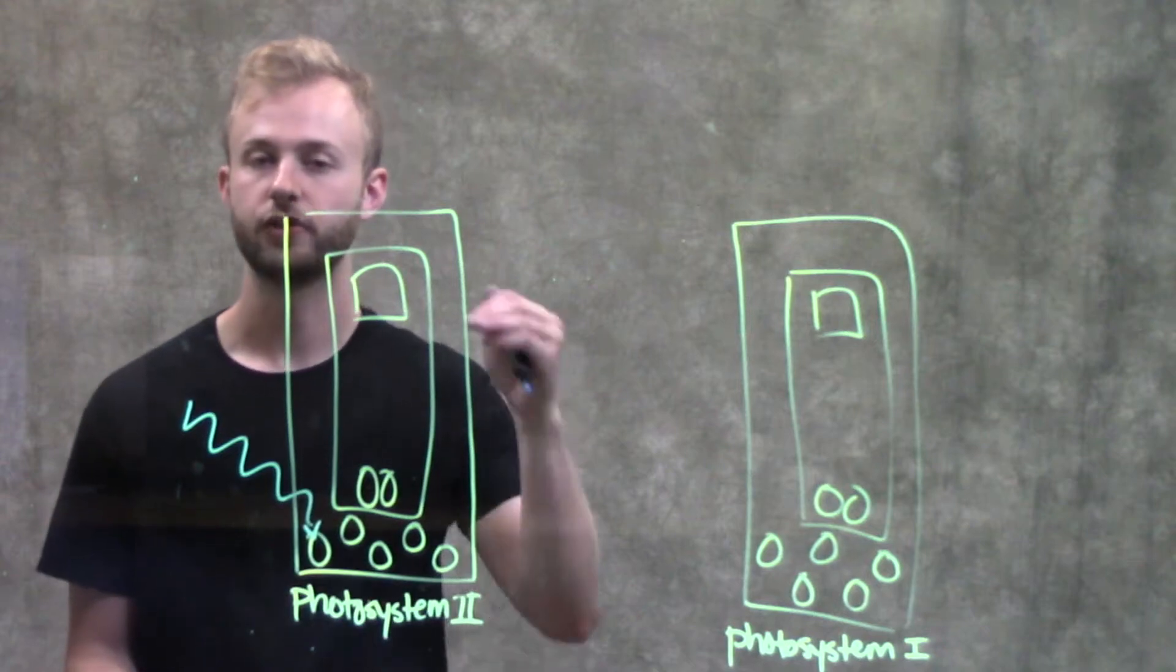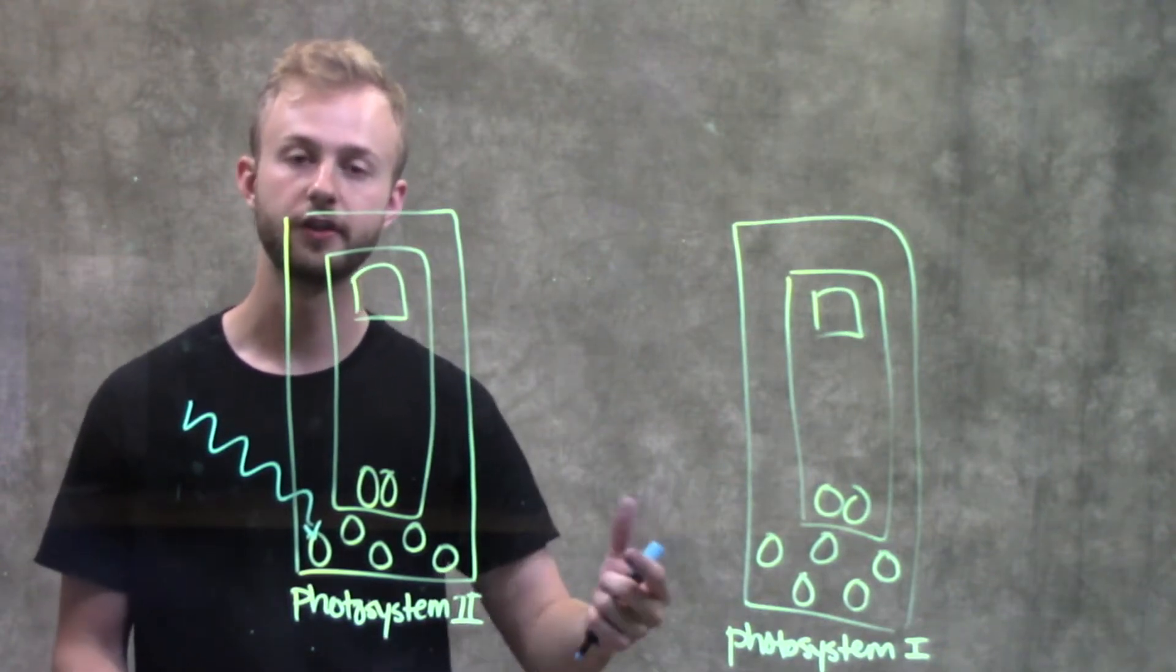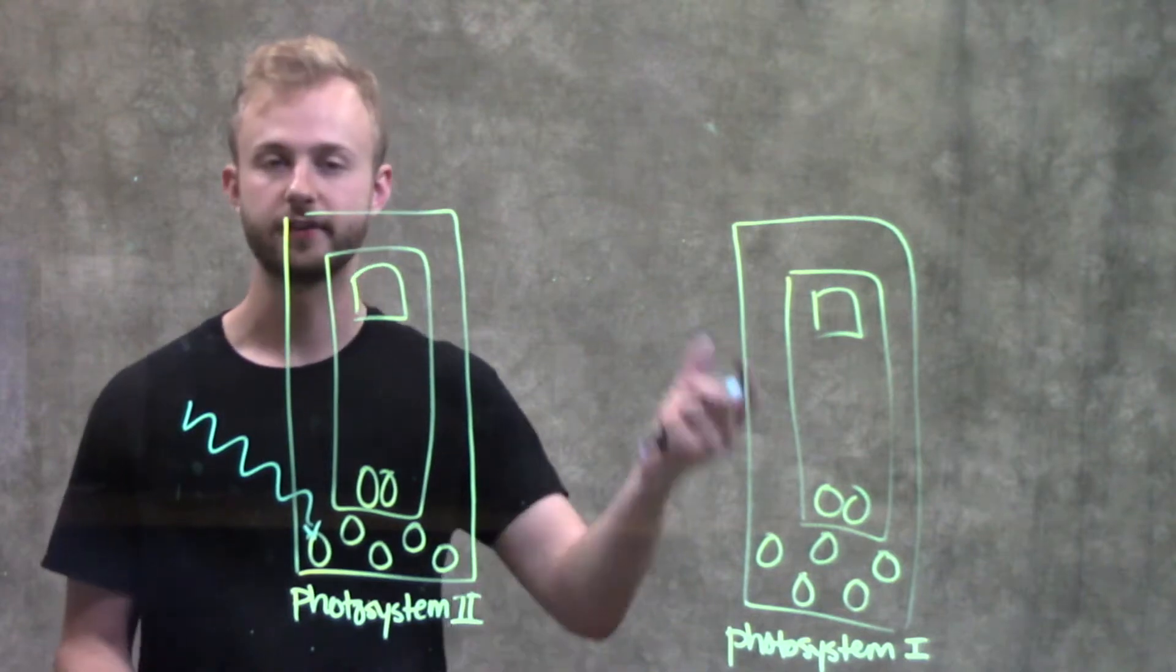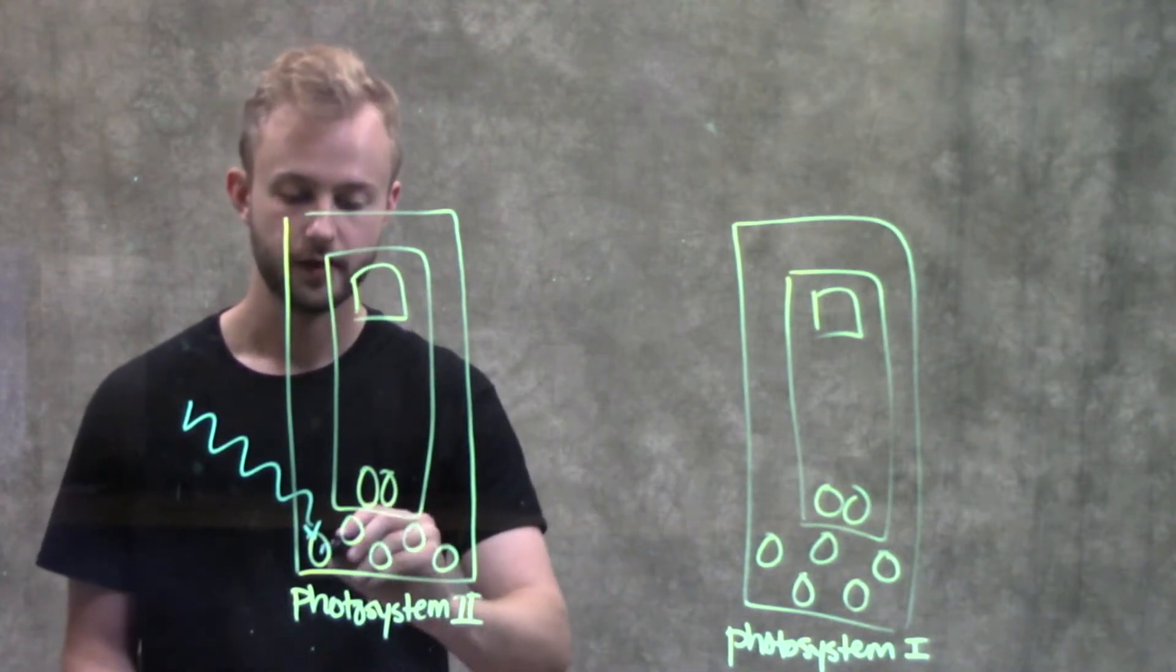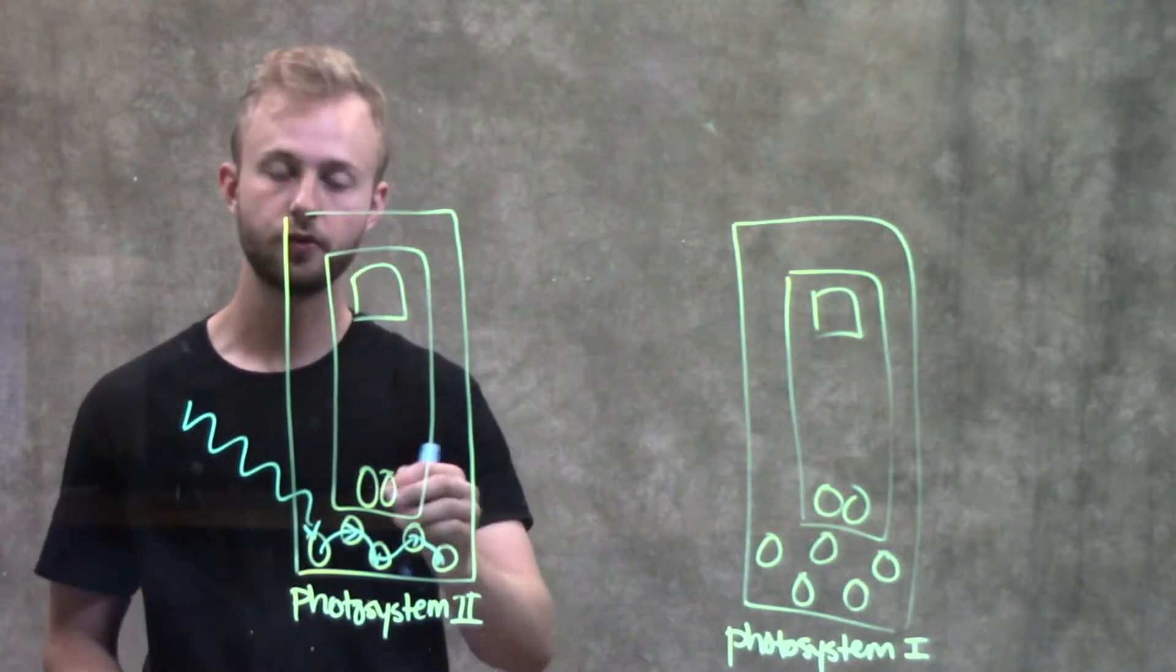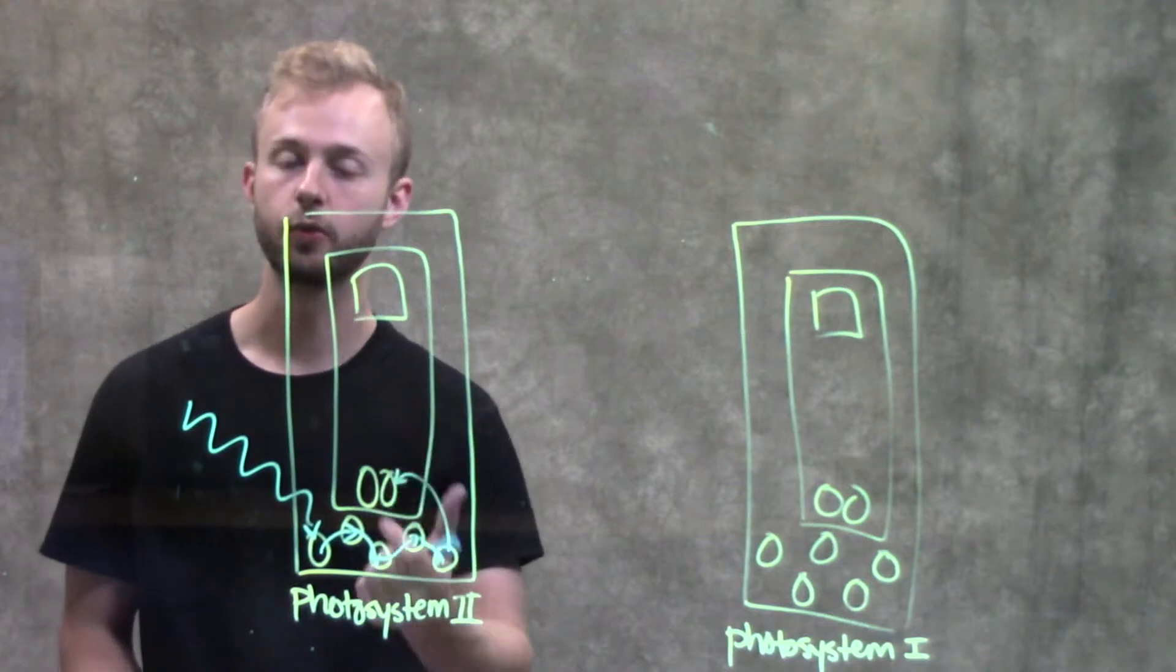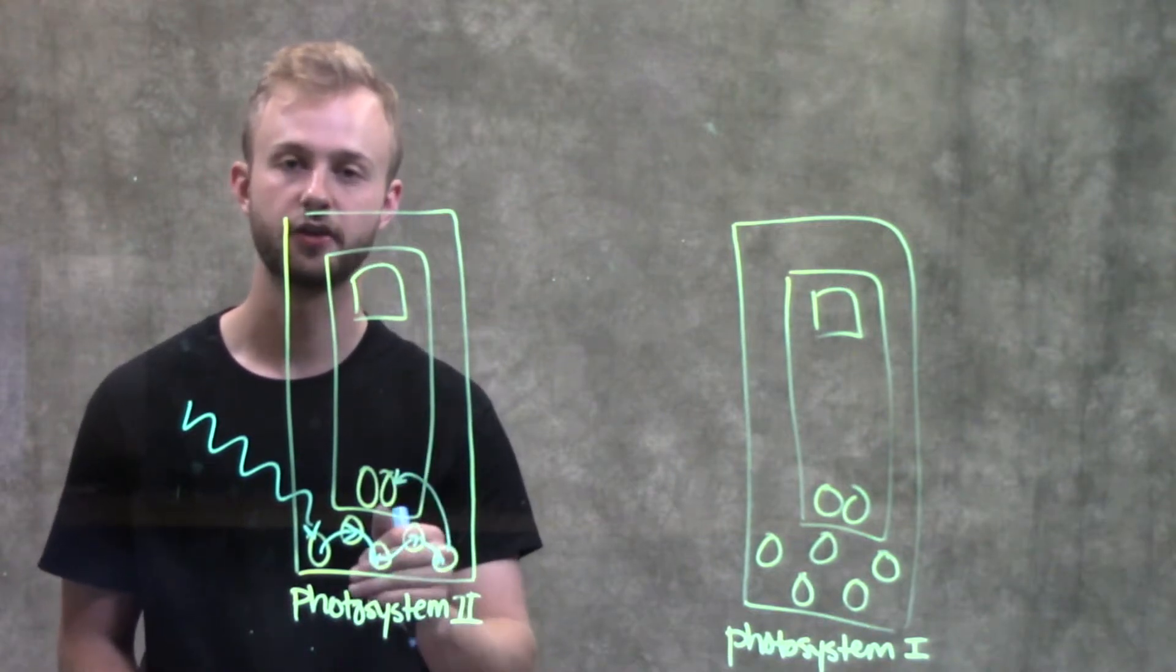When that happens, the electron goes to the excited state, and as it falls back to the ground state, an electron in a nearby chlorophyll atom gets excited. By doing this, they pass along energy through all the chlorophyll molecules and eventually to the P680 chlorophyll A molecules in the reaction center complex.